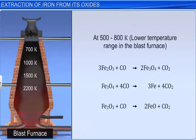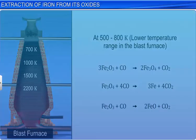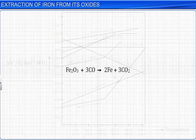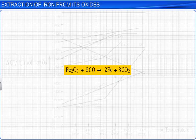Let us now see how iron oxides get reduced to iron in different temperature ranges. Between 500 and 800 Kelvin, carbon monoxide reduces iron oxides as shown here. Carbon monoxide acts as a reducing agent since it has a lower negative delta G⁰ value for the oxidation of carbon monoxide to carbon dioxide than for the oxidation of carbon to carbon monoxide. Thus, in a blast furnace, hematite is reduced by carbon monoxide even though carbon is mixed with it. The equation for this reaction is: Fe₂O₃ + 3CO → 2Fe + 3CO₂.